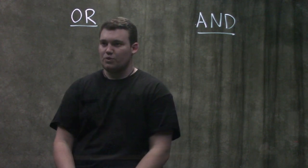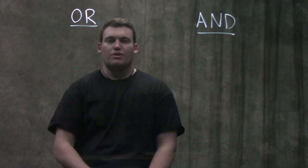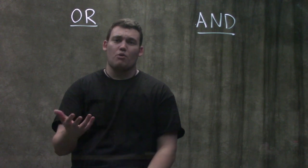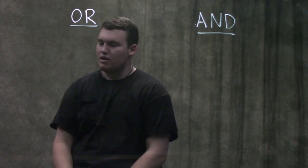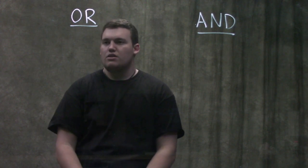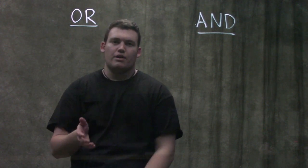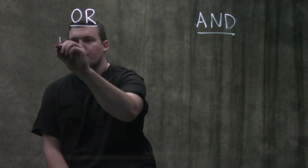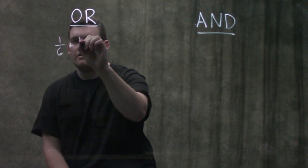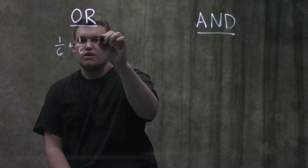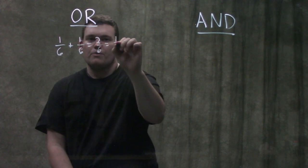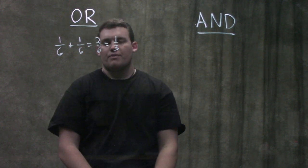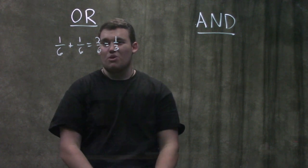The OR rule is the addition rule — we add the probabilities. It's called the OR rule because we say we want this to happen OR this to happen. Using a dice as the simplest example: what are the chances of rolling a 3 or a 6? We take 1/6 for the 3 and 1/6 for the 6, so our chance becomes 2/6 or 1/3. Not hard — students just don't know when to use OR versus AND.